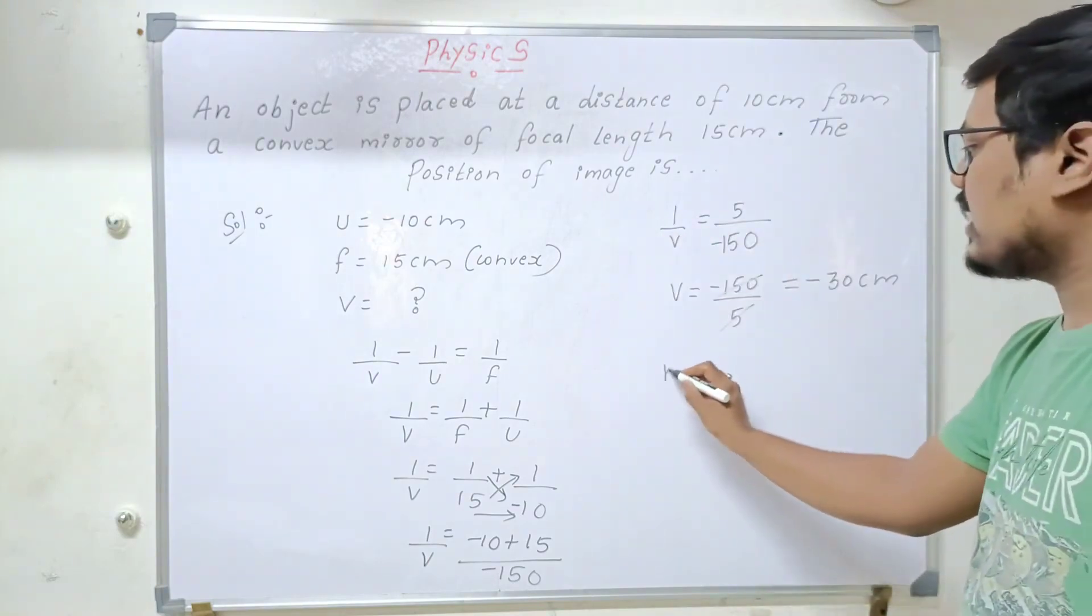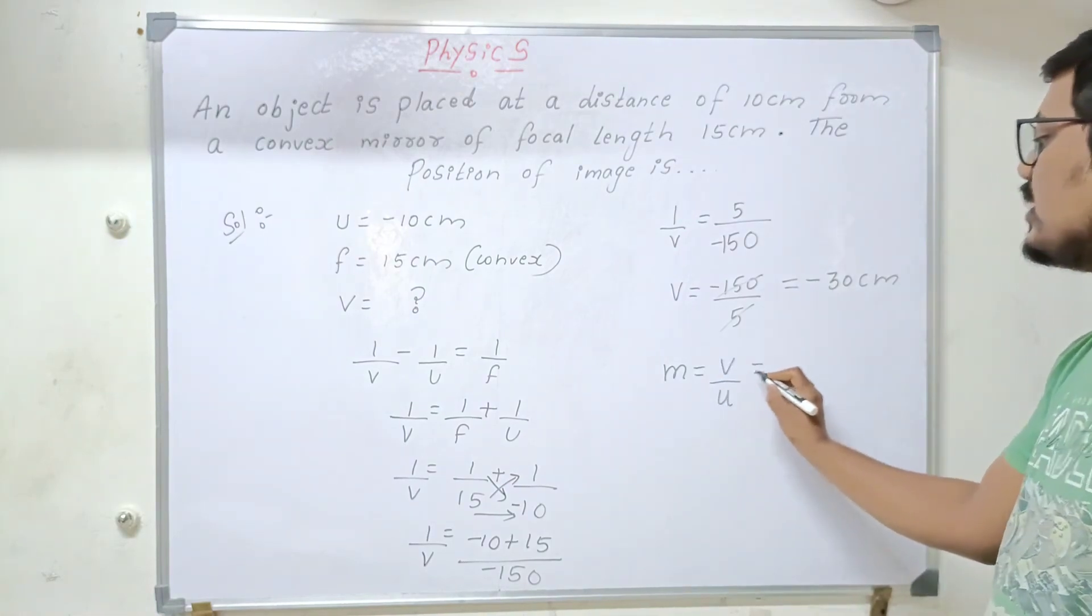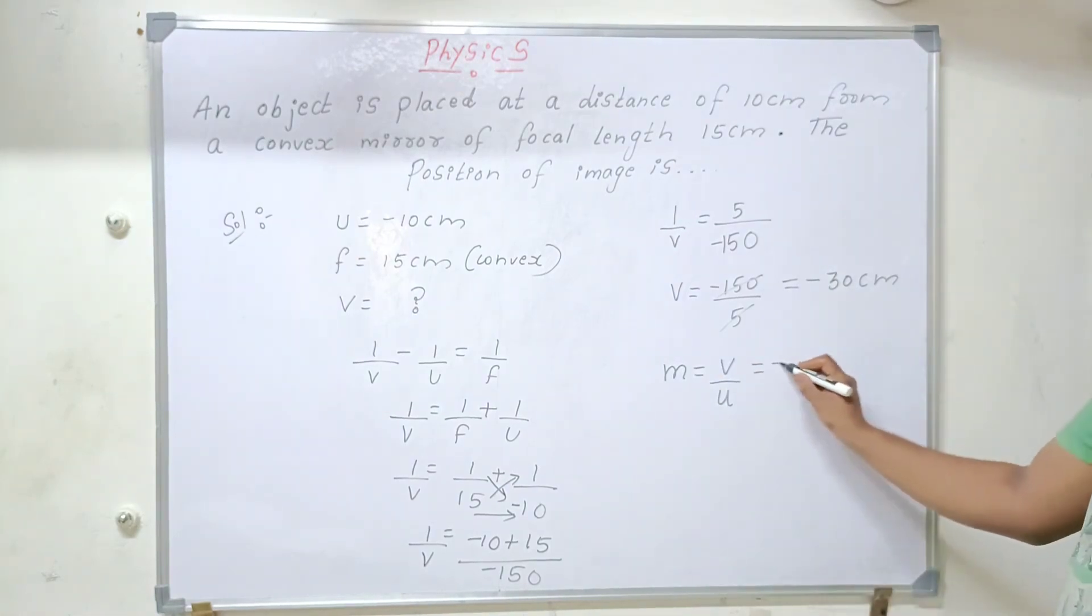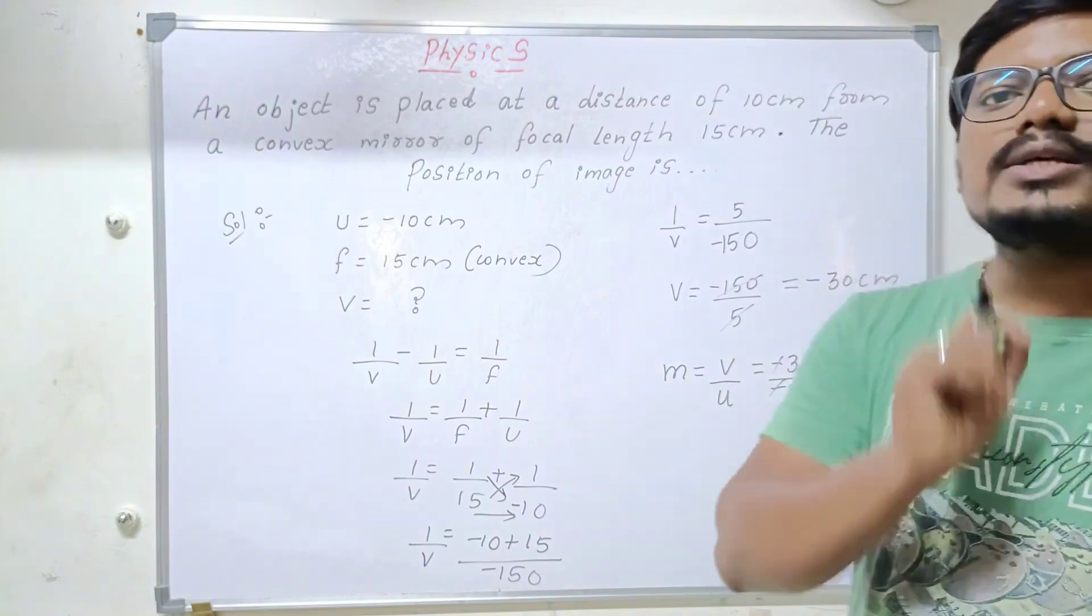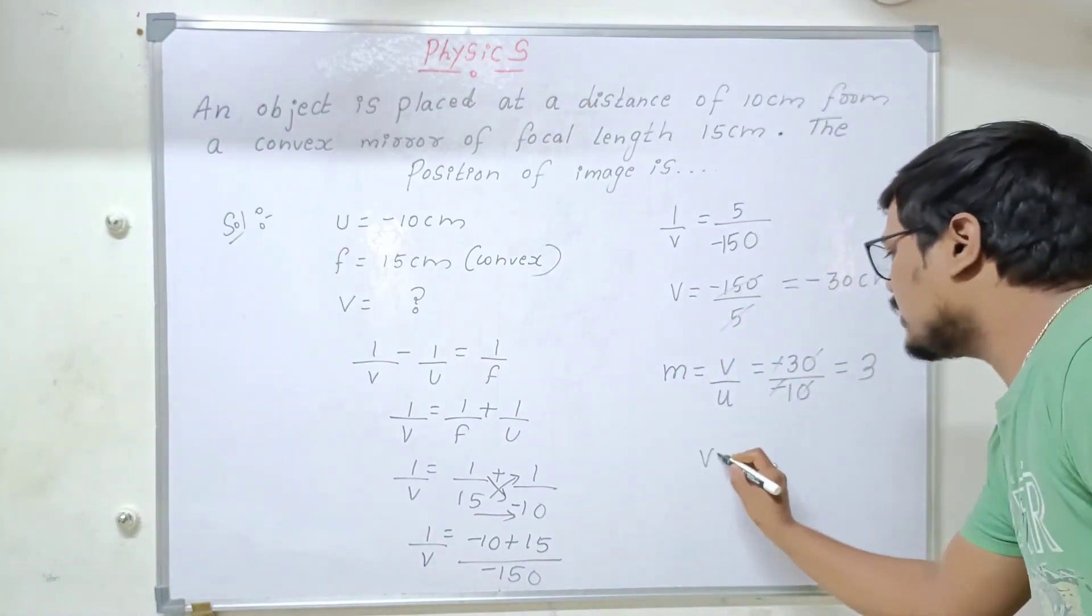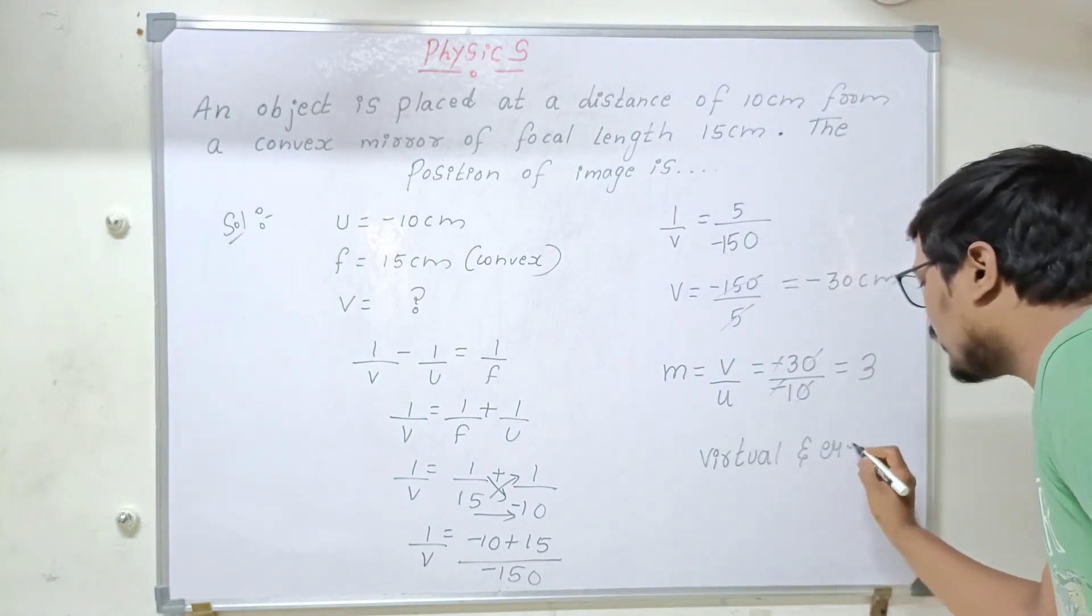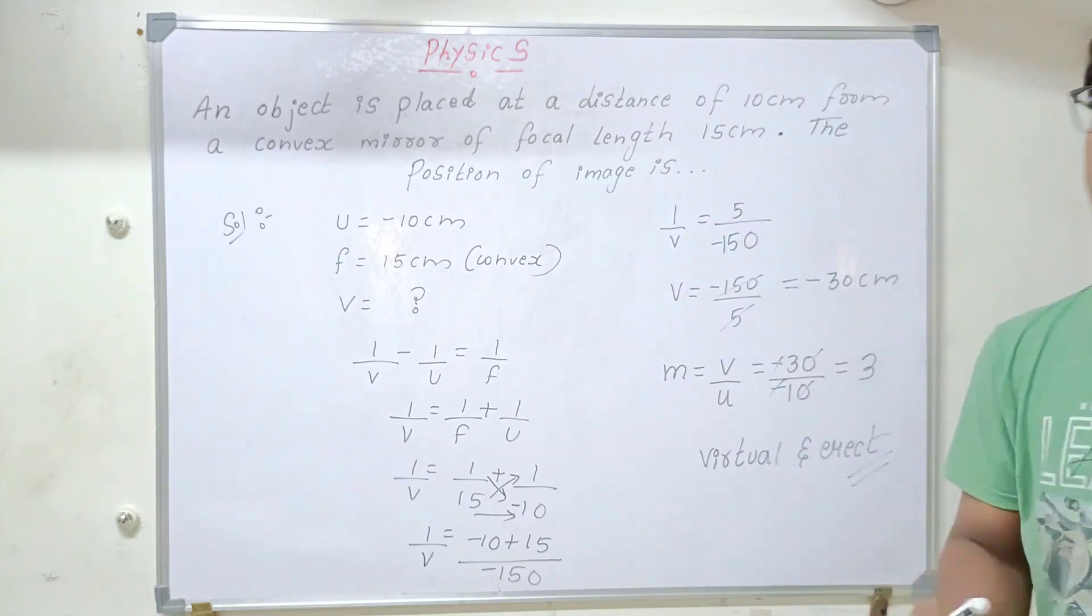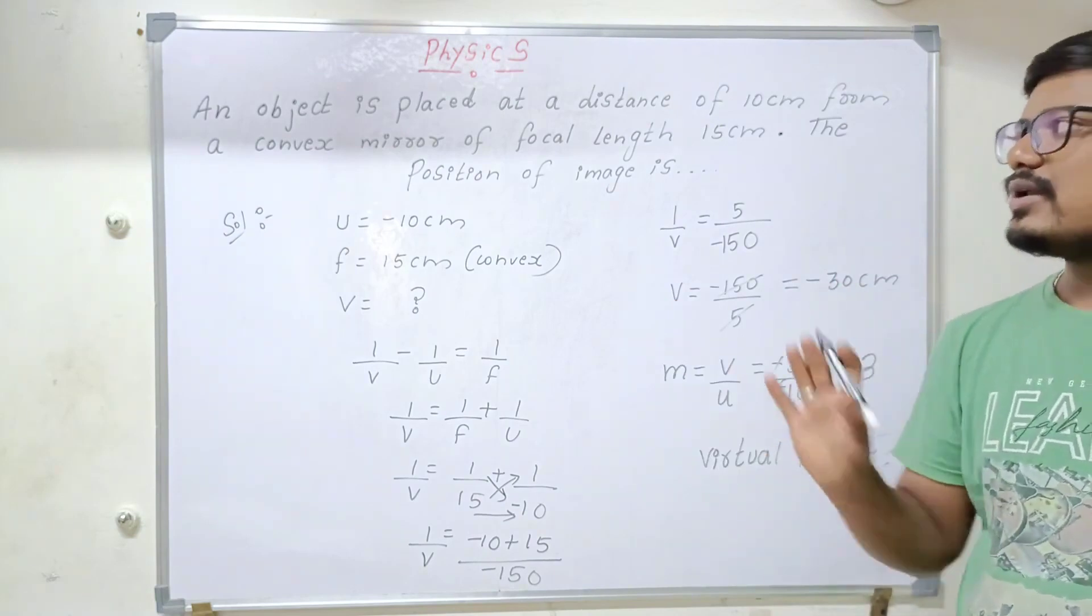Now let us see how to find magnification for this. M equals V by U. So what is the V value I have got? Minus 30. And what is the U value we have? Minus 10. Minus and minus I can cancel. We will get magnification as 3. If magnification is positive, what is the nature of the image? The nature of the image is virtual and erect. Like this, all the steps you need to write and finally give the conclusion. Then only you are gonna get 5 marks in your exam.